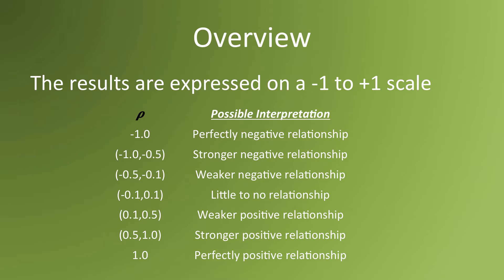When a correlation is negative, it means that as the value of one variable goes up, the other one goes down. Positive correlations mean that as the value of one variable goes up, the other one goes up. The closer a relationship is to zero, the less related the two are — changes in one variable do not appear to correspond to changes in the other.